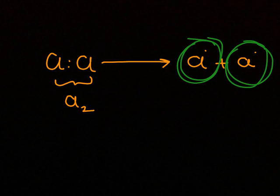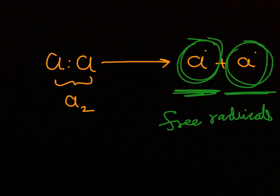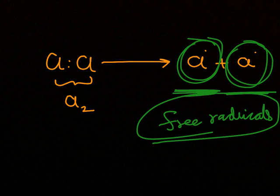These atoms or chlorine atoms are known as free radicals. Remember free radicals. This is what is meant by free radicals - a free atom with its original electronic configuration is known as a free radical after bond cleavage.